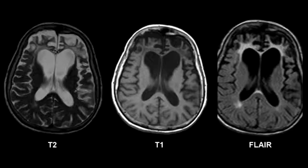What areas of the brain are spared by Pick's Disease? The areas of the brain spared by Pick's Disease includes the parietal lobe and the posterior two-thirds of the superior temporal gyrus.